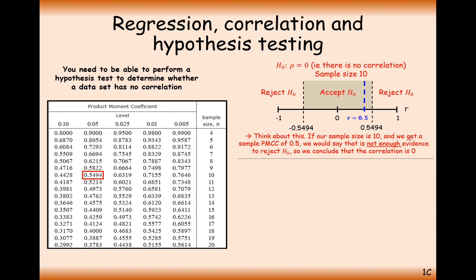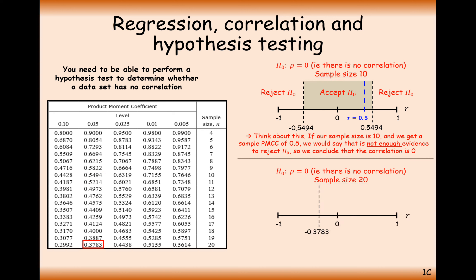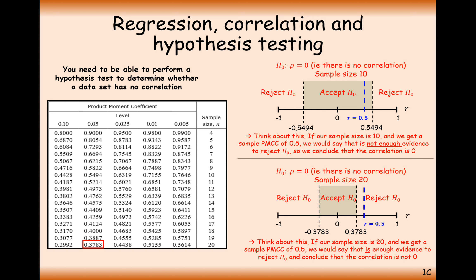If our sample size is 10 and we get a PMCC of 0.5, we would say there is not enough evidence to reject H0, so we conclude correlation is 0. However, with a sample size of 20, we move to row 20 on our table. With more data points we require less evidence that they form a perfectly straight line — we'd expect some natural deviation. So with a PMCC of 0.5 and n=20, we would actually reject H0 and accept the alternative hypothesis that there is some correlation. The same PMCC value leads to different conclusions depending on sample size.